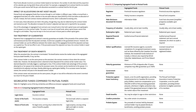Tax treatment of guarantees. Payments from a segregated fund contract's maturity guarantees are taxable. If the proceeds of the contract, after commissions, are less than the adjusted cost base, income tax is payable on the guaranteed amount. However, the contract holder can use the difference between the market value of the segregated fund and the adjusted cost base as a capital loss. The net tax effect is zero. If the proceeds exceed the adjusted cost base, the contract holder is taxed on the capital gain.